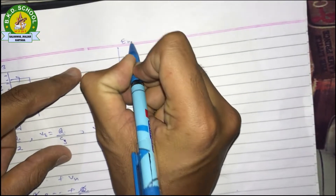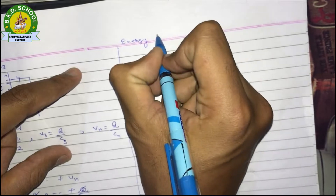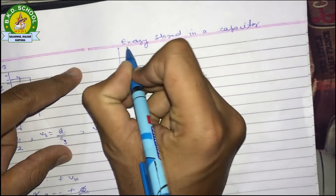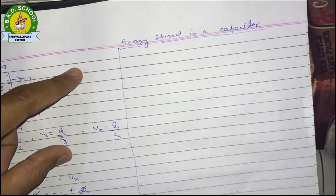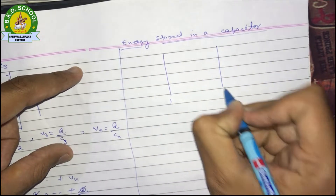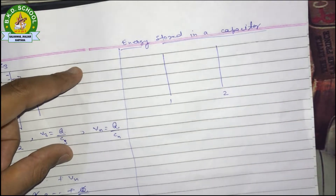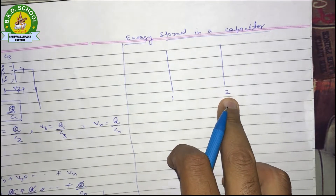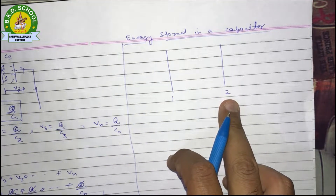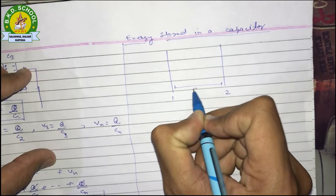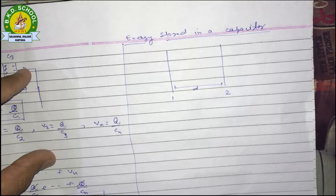The next important topic is energy stored in a capacitor. Let us suppose we have two plates of a capacitor — plate one and plate two — and initially both plates are electrically neutral, meaning the positive and negative charges on each are equal. They are separated by a distance D.